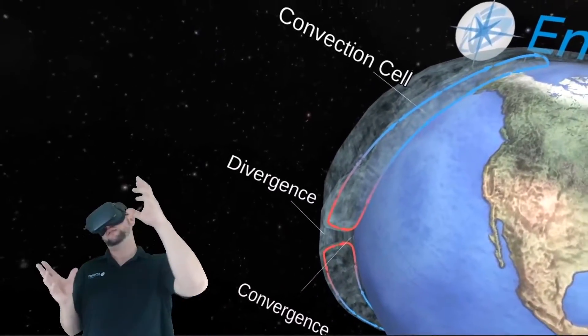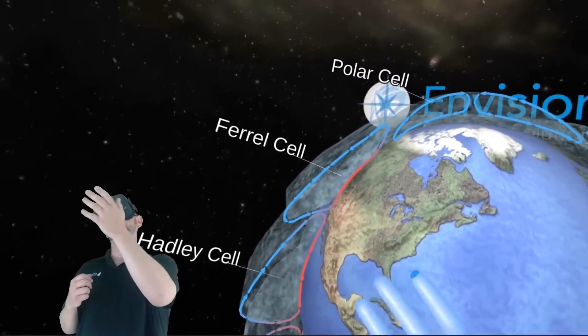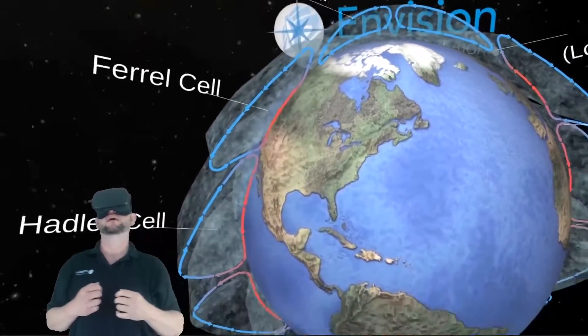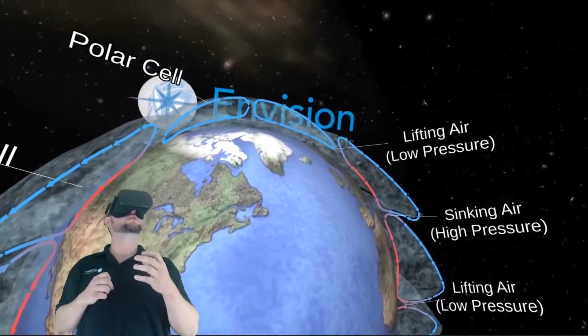And within that broad hemispheric circulation you can look at individual cells known as a Hadley cell, a ferrel cell, and a polar cell. Each hemisphere has their own similar cellular composition.